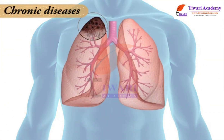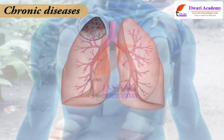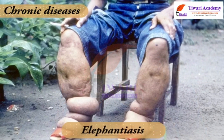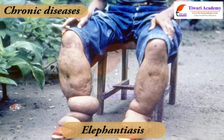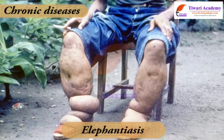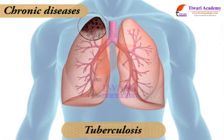Chronic diseases are those diseases whose symptoms last for months or years. Examples include elephantiasis, tuberculosis, etc.